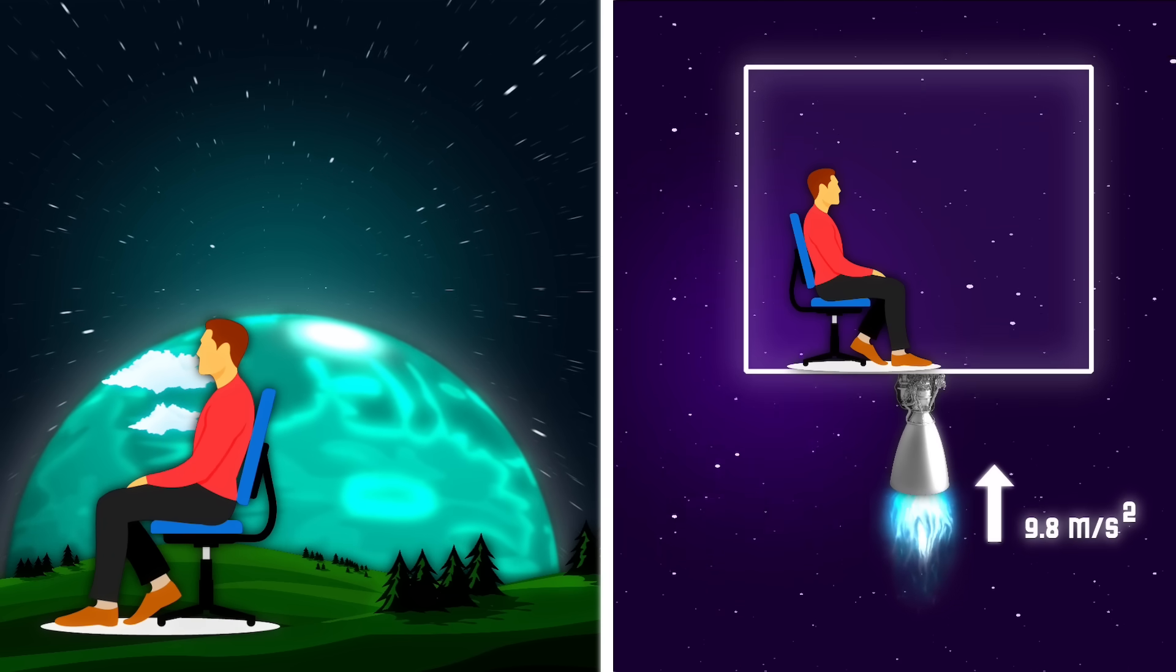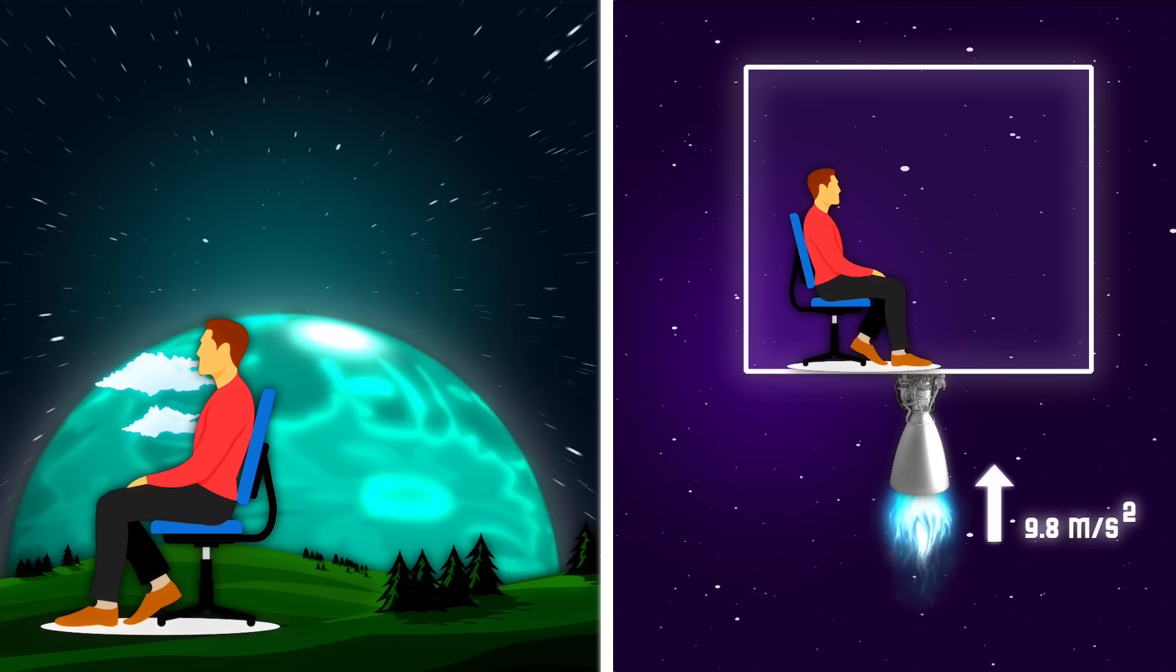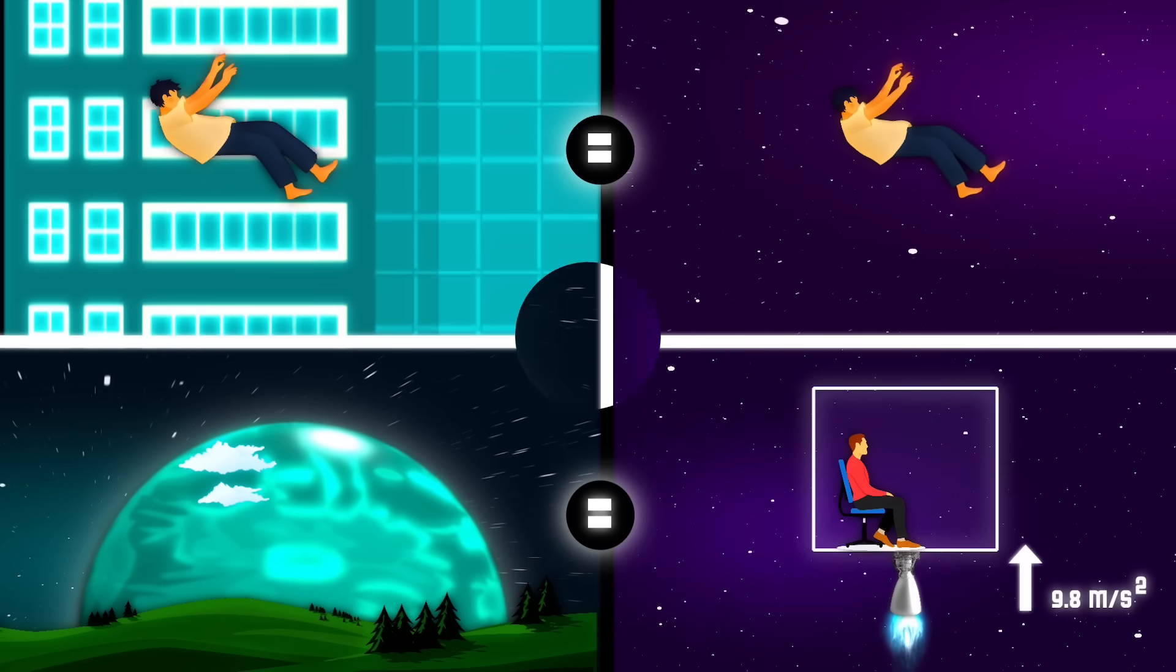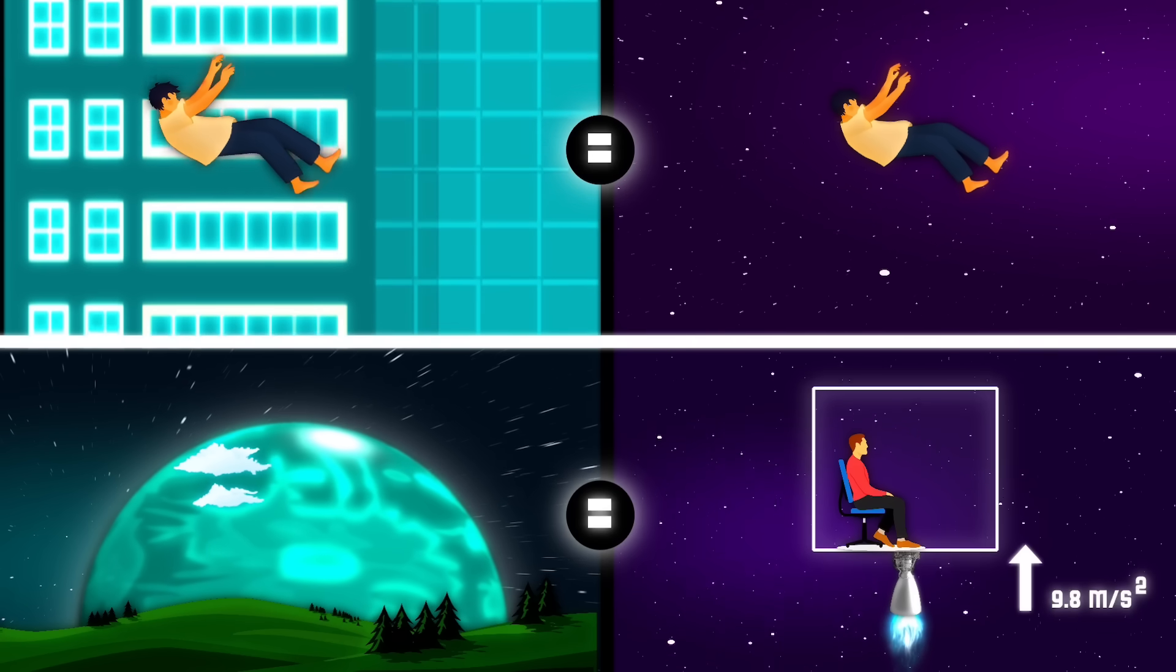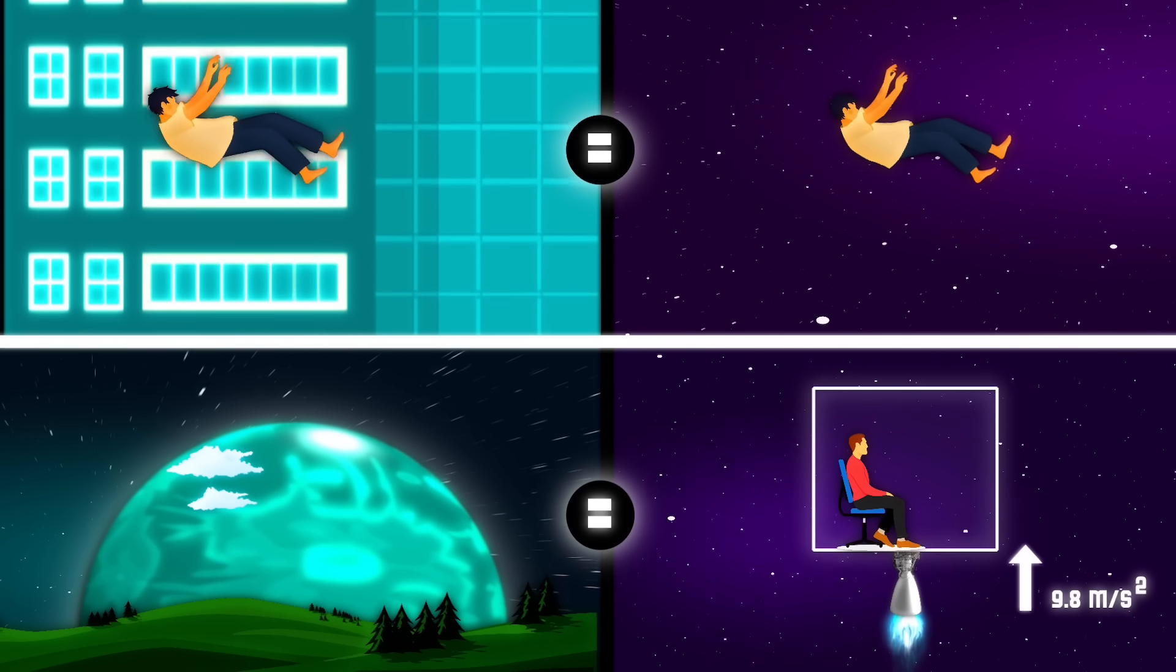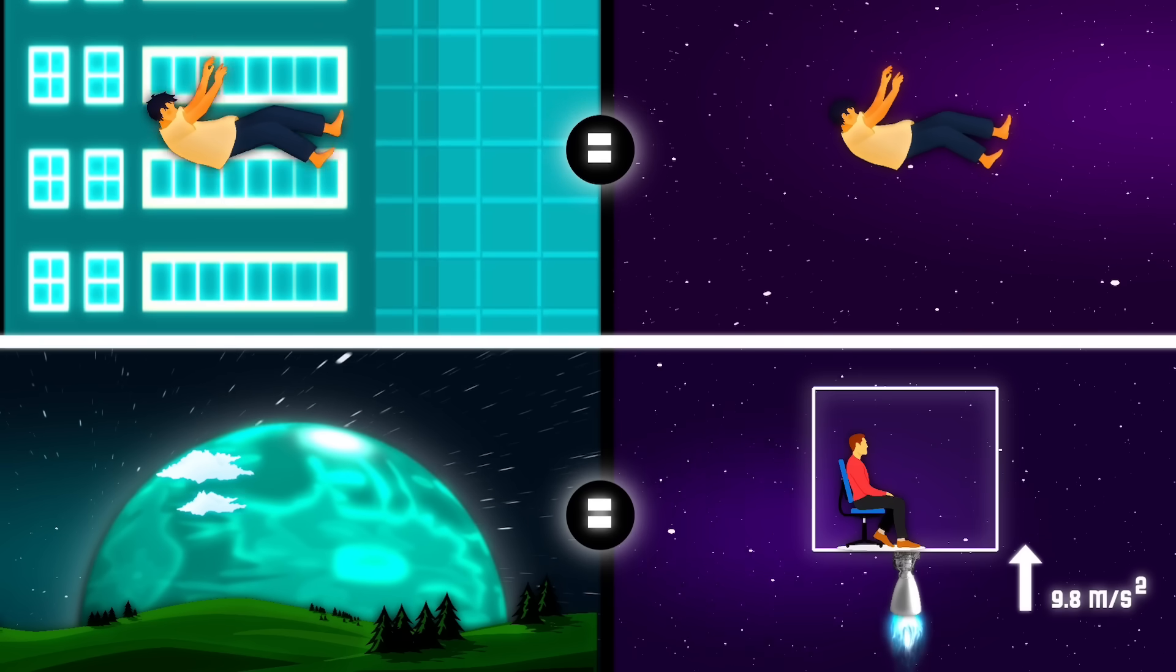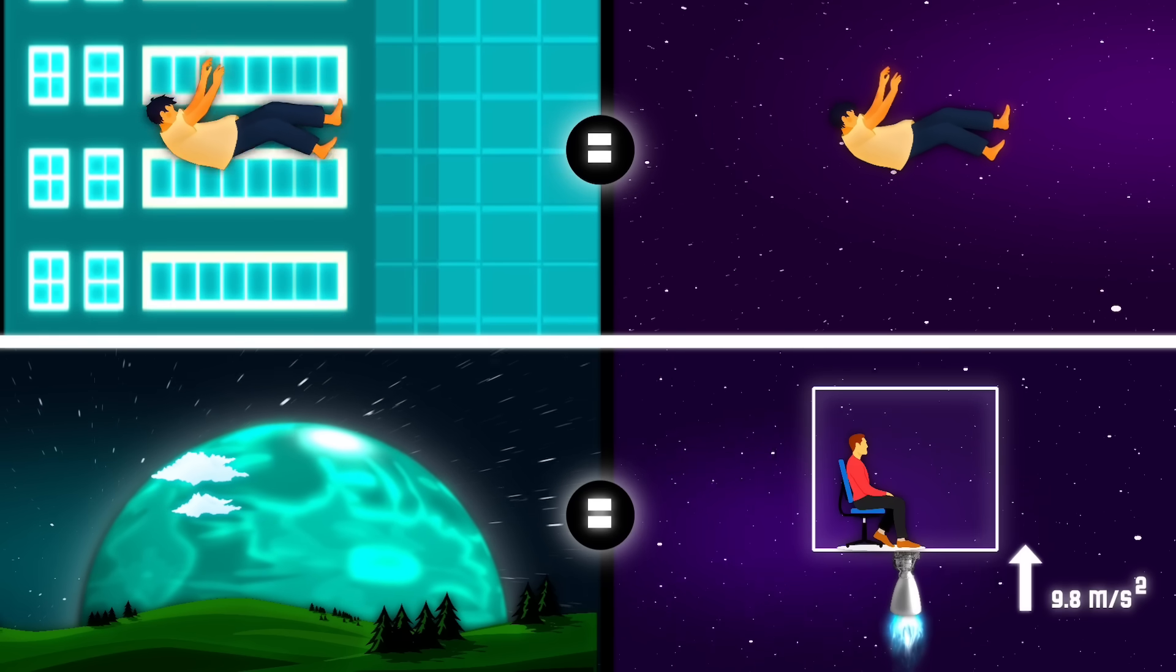Whatever can be done with the help of gravity on Earth can also be done in this lift. I don't feel any difference, whether in space or on Earth. So free fall on Earth is equal to free movement in space. Gravity on Earth is equal to 9.8 meters per second square acceleration in space. That is, acceleration causes gravity.